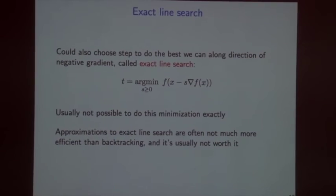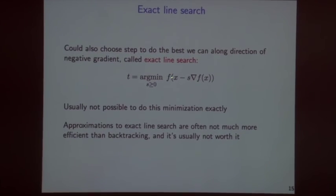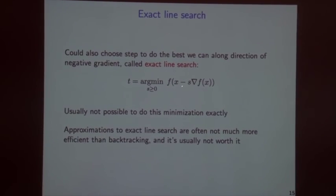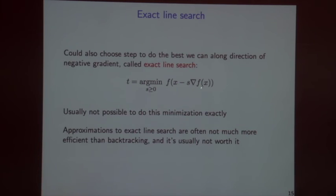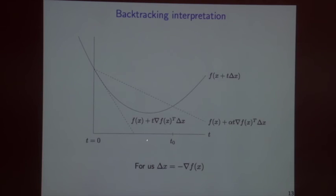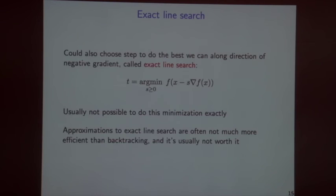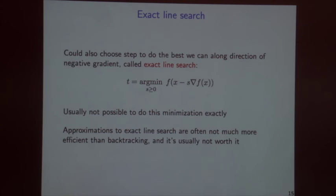An alternative is exact line search: solve min_s f(x − s·∇f(x)) to find the truly optimal step size. This corresponds to locating the minimum of the objective-vs-t curve. However, this is usually not analytically tractable, and in practice backtracking line search performs nearly as well, so exact line search is generally not advised.